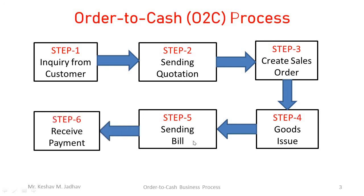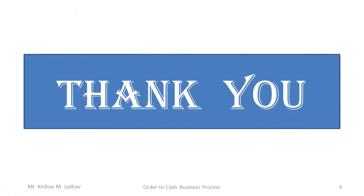The last step is receiving payment from the customer. After receiving payment for the sold product, the accounting entry will be: bank account debit to customer account. This is the typical order to cash process. Thank you for watching.